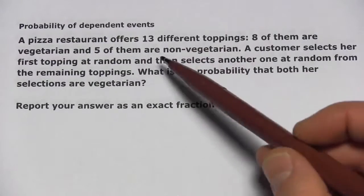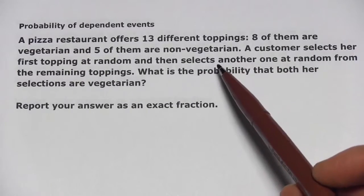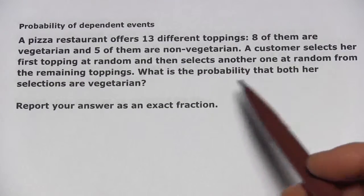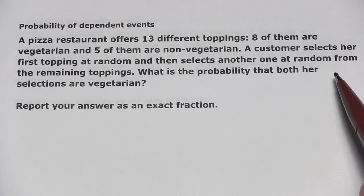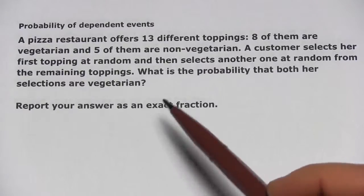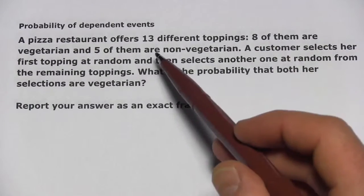A pizza restaurant offers 13 different toppings. Eight of them are vegetarian and five of them are non-vegetarian. A customer selects her first topping at random, and then selects another one at random from the remaining toppings. So, the first time that this customer is selecting, there are 13 toppings.